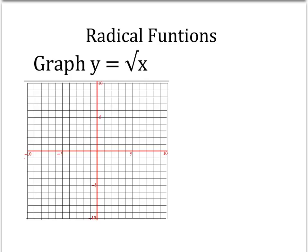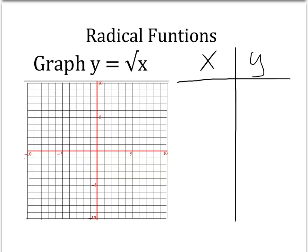We want to start off with a graph of a simple radical function — the graph of y equals the square root of x. To graph this, we want to create an x and y table. The values we select for x should be numbers that we can take the square root of easily.